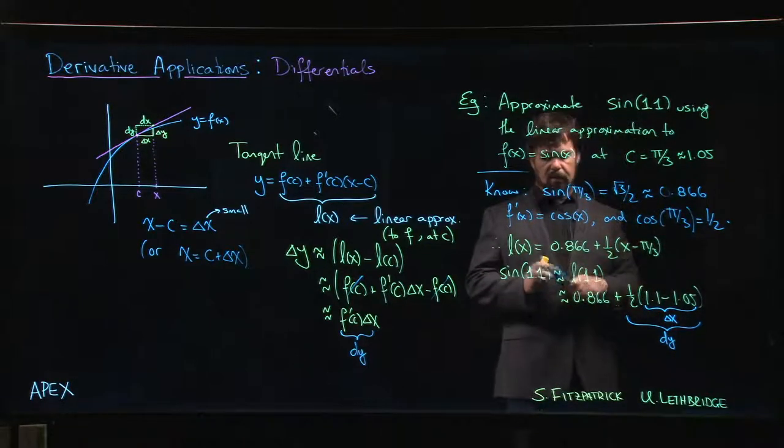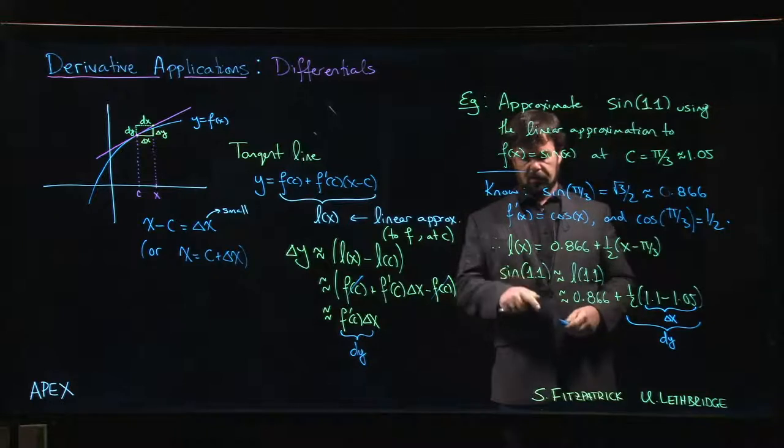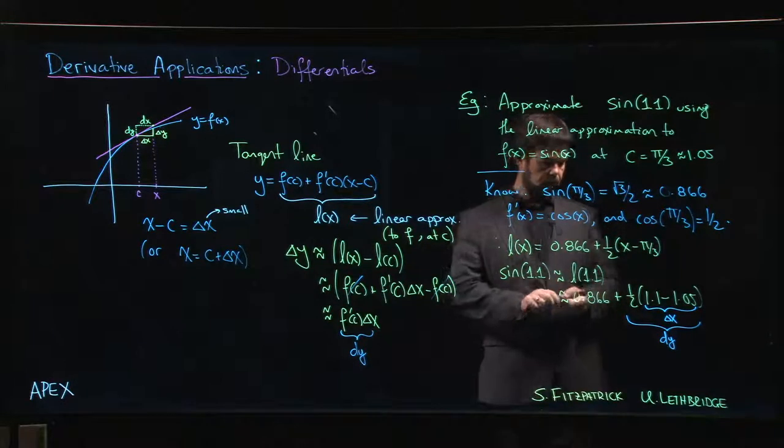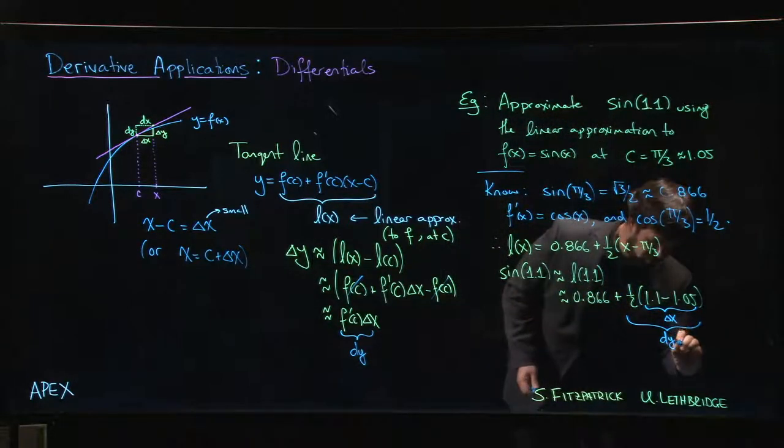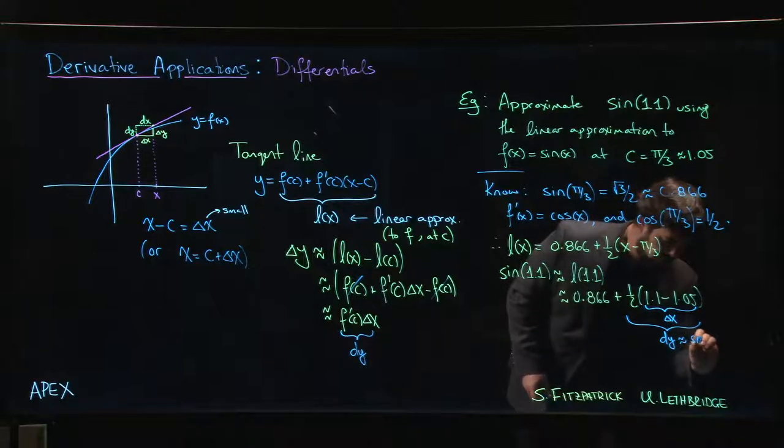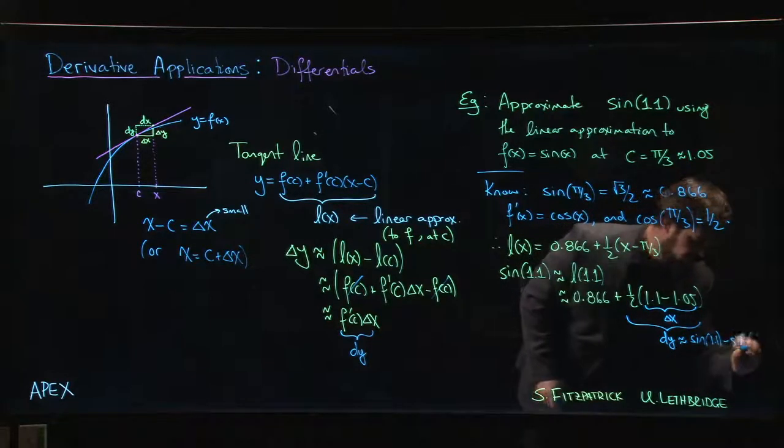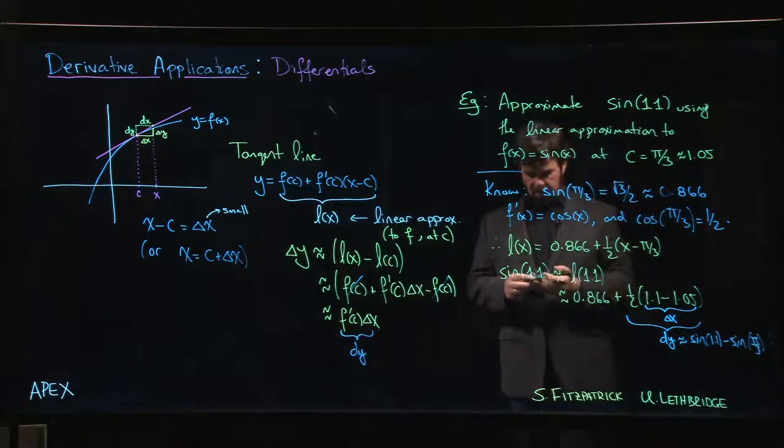So another way that we could have phrased this is that the difference between sine at 1.1, so the idea is that this dy is approximately sine at 1.1 minus sine at pi over 3.